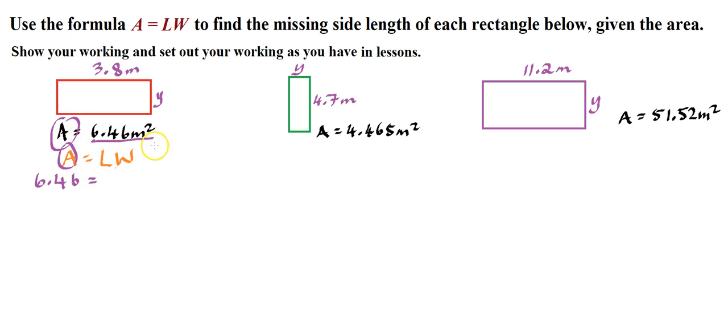And that equals, let's plug in what we're given. We are given the length, so that is 3.8 times Y. We're not given the value of Y yet. We have to find that out. So, the next line of working says 6.46. But what is 3.8 times Y? We write it like this, because we don't know what Y is just yet. So 3.8Y.